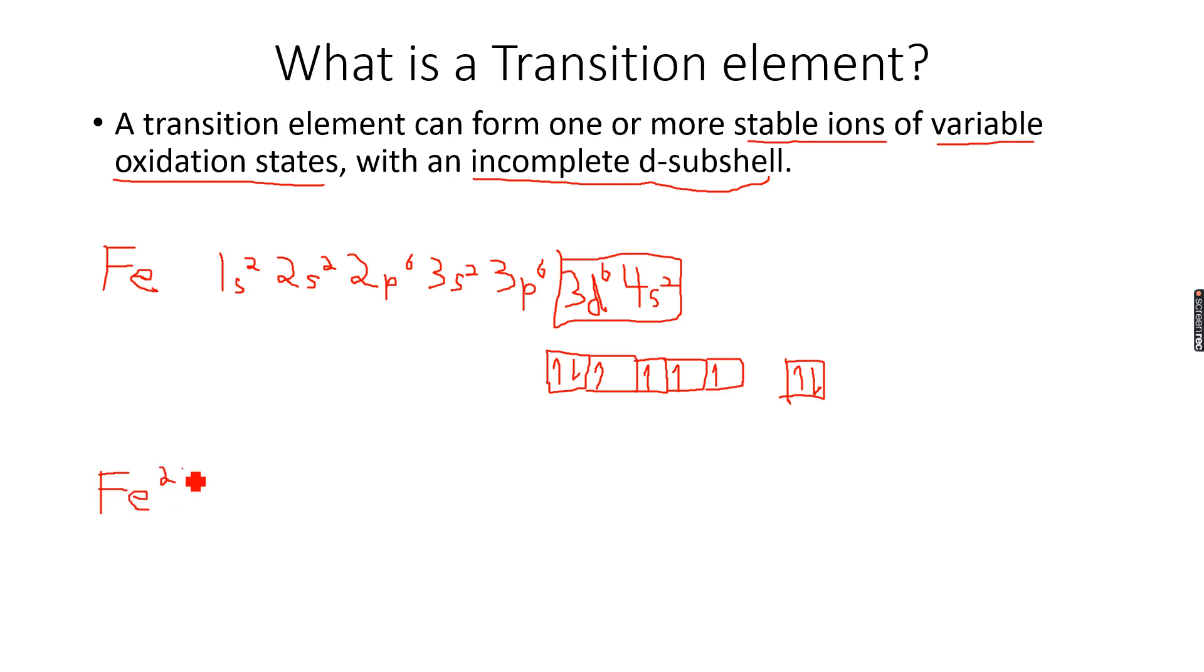I have 26 electrons in my Fe atom. The Fe2+ ion has lost 2 electrons and therefore will have only 24 electrons. I'm not writing the complete electronic configuration, I'm just making the outermost subshells. This is my 3D subshell. Because this part remains the same, I'm just going to write the 3D and 4S subshells.